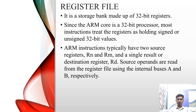Moving on to the register file. It is a storage bank made up of 32-bit registers. Since the ARM core processor is a 32-bit processor, most of the instructions treat the registers as holding signed or unsigned 32-bit values. ARM instructions typically have two source registers, RM and RN, and a single destination register RD. Source operands are read from the register file using internal buses A and B respectively.